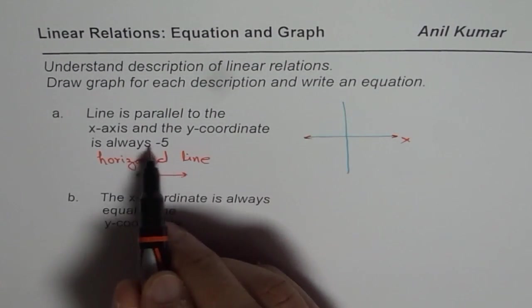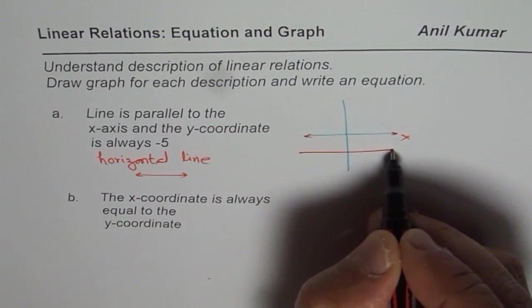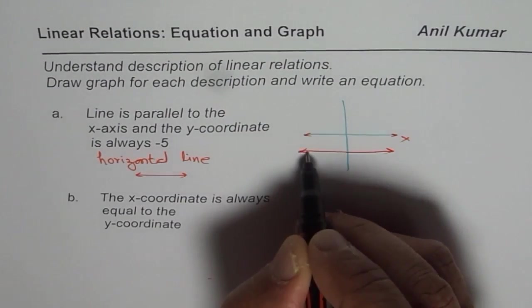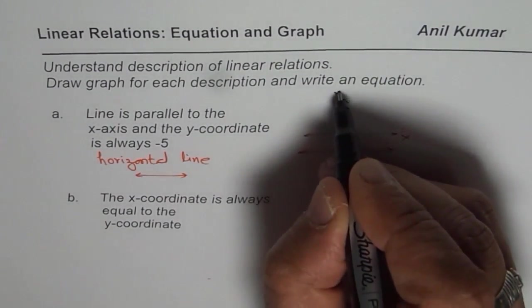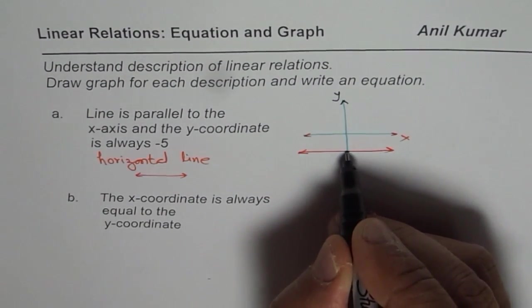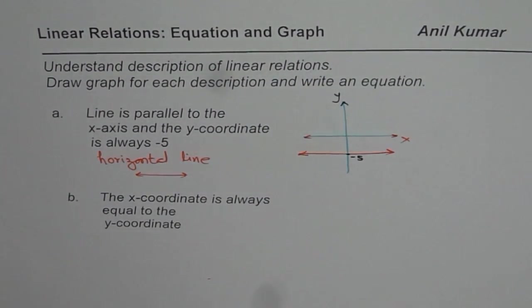And y-coordinate is always minus 5. That means somewhere here. So let me sketch the line now. That is the line we are talking about, which is parallel to x-axis and y-coordinate is minus 5. So that is how we can get the equation.